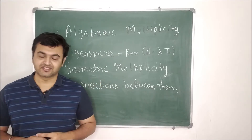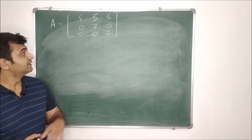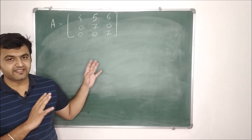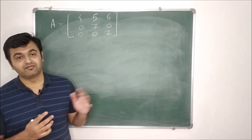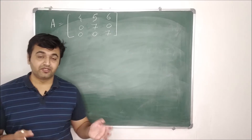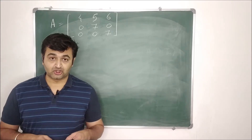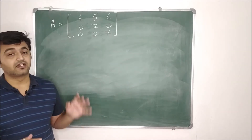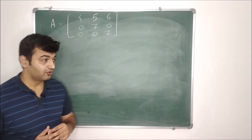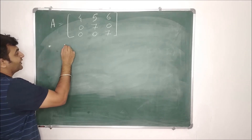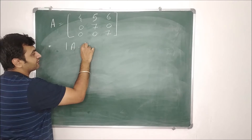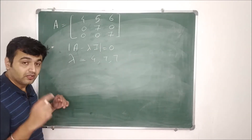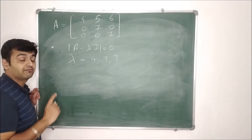Let's go to the first example. Consider a 3x3 matrix. You can observe it's a nice upper triangular matrix, so the calculation won't be too large. Whenever you see a question on algebraic multiplicity, geometric multiplicity, or eigenspaces, your first step is to find the eigenvalues for the given matrix. How do you find the eigenvalues? You solve the characteristic equation. Once you find the eigenvalue, algebraic multiplicity comes into the picture.